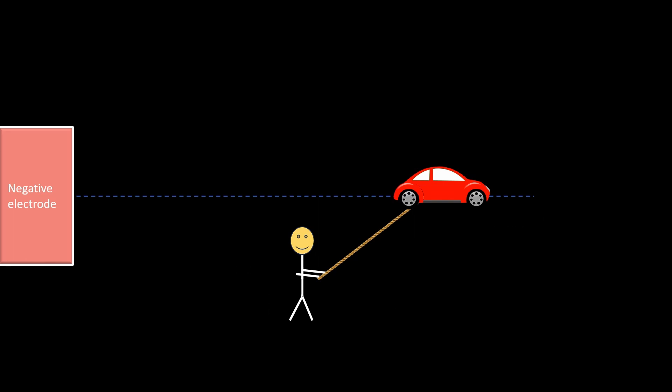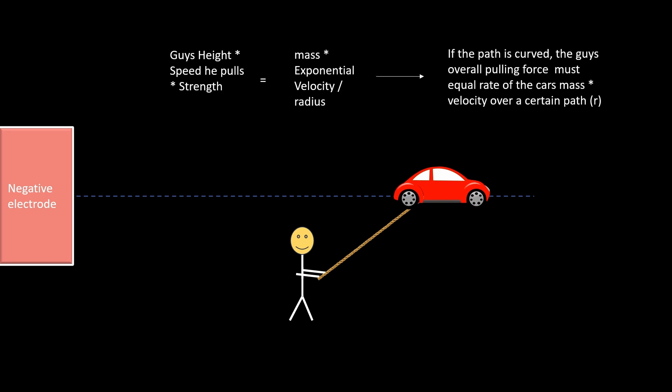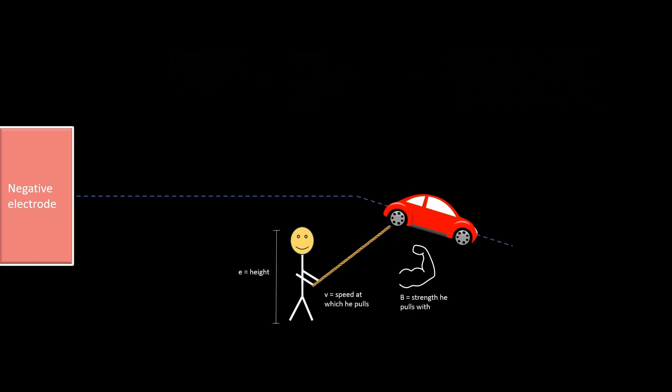The guy must be tall enough, fast enough, and pull with enough strength to pull the car of a certain mass, exponential velocity, over a specific radius. If you increase or decrease the guy's height, or speed at which he pulls, or strength at which he pulls, the path of the car will change.